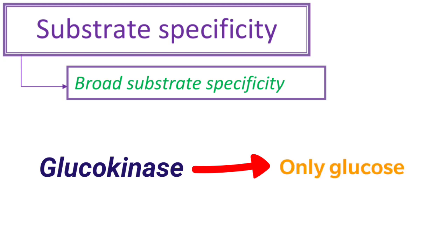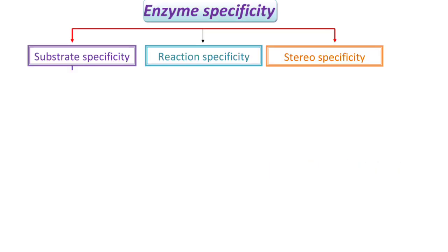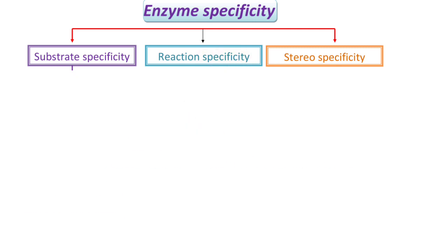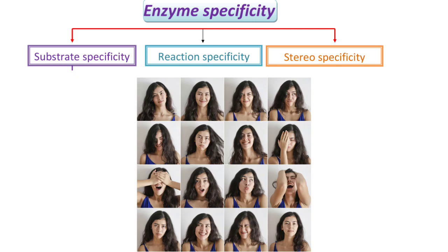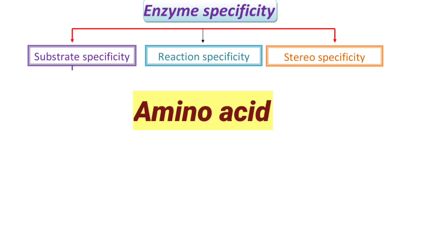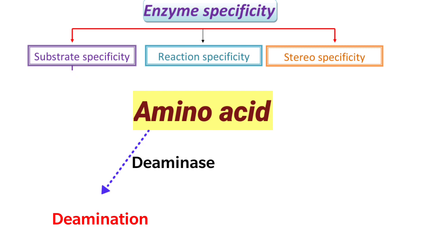Now coming to the second type of enzyme specificity, that is reaction specificity. An enzyme is specific to a particular reaction and catalyzes only one type of reaction. The same substrate can undergo different types of reactions, each catalyzed by a separate enzyme. For example, if you want deamination of an amino acid, then you have to use deaminase.